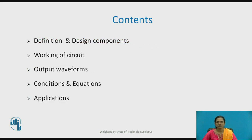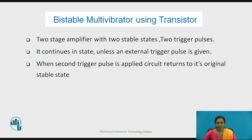The bistable multivibrator is a two-stage amplifier that has two stable states. It requires two trigger pulses to generate these two stable states. It continues in the same stable state unless an external trigger is given to the circuit, and it will generate the second stable state when the second trigger pulse is applied.